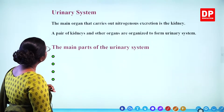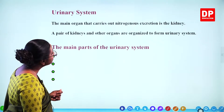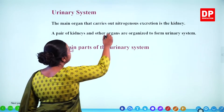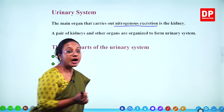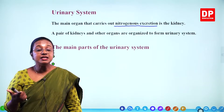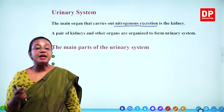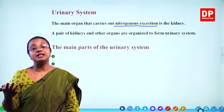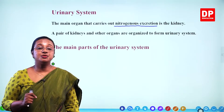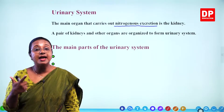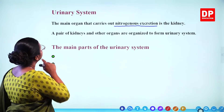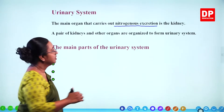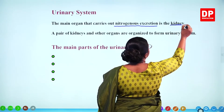The main organ that carries out nitrogenous excretion is the kidney. Urea and uric acid are the two main nitrogenous waste products produced during metabolic activities, so the main organ that carries out nitrogenous excretion is the kidney.